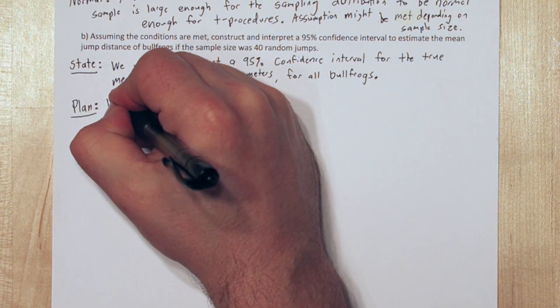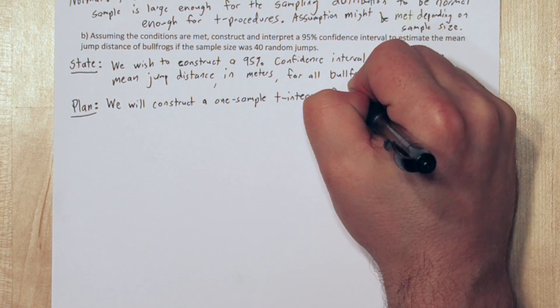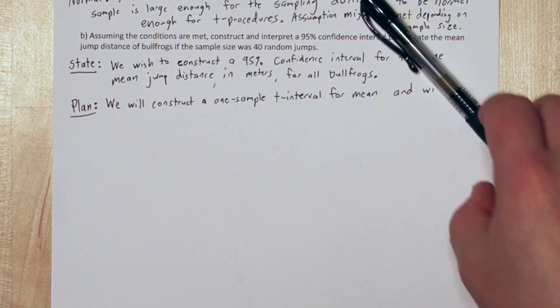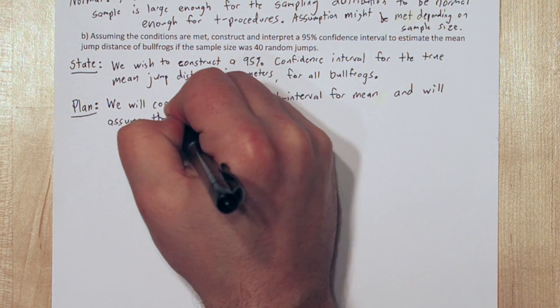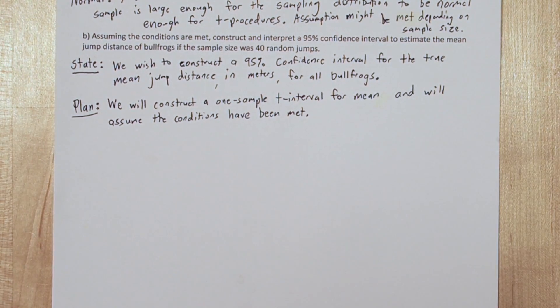The plan step is easy for this one. We'll construct a one sample T interval for mean, and we'll assume the conditions have been met. So normally we'd have to check all the conditions, but we did that in part A, and we made an assumption they're all met. The other thing we need in our plan step is our inference procedure, which is a one sample T interval.